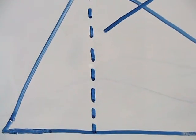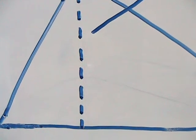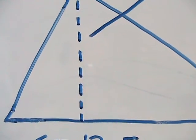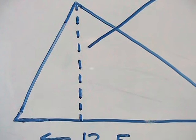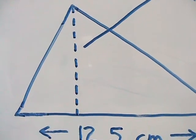In this video, we're going to be finding the area of a triangle. On the board, we have a scalene triangle. Each side has a different measurement.